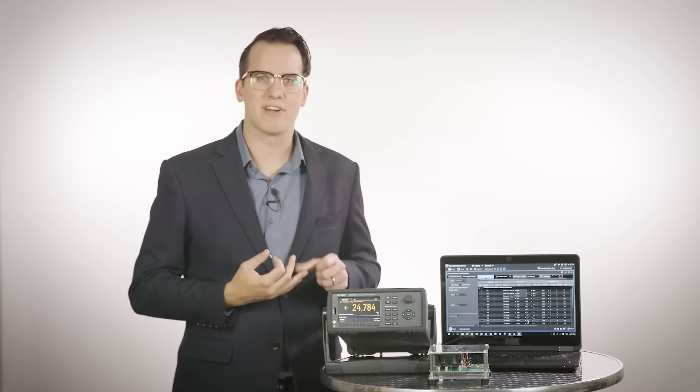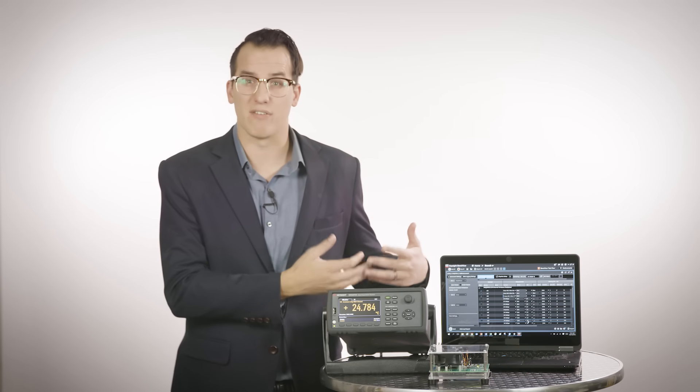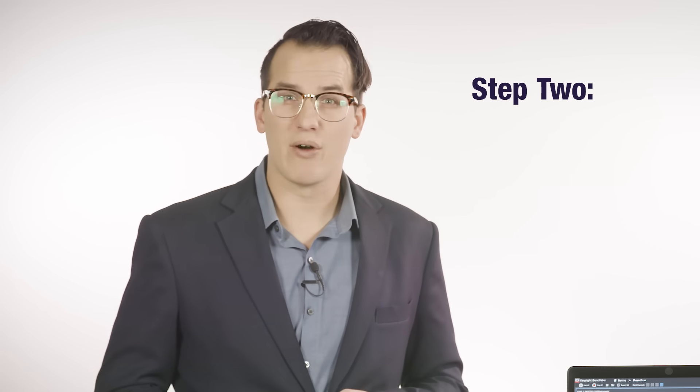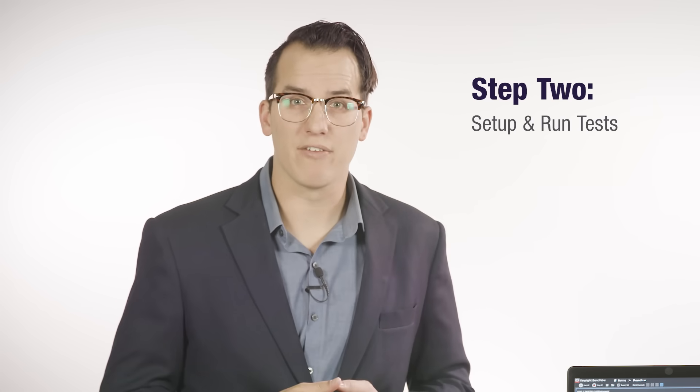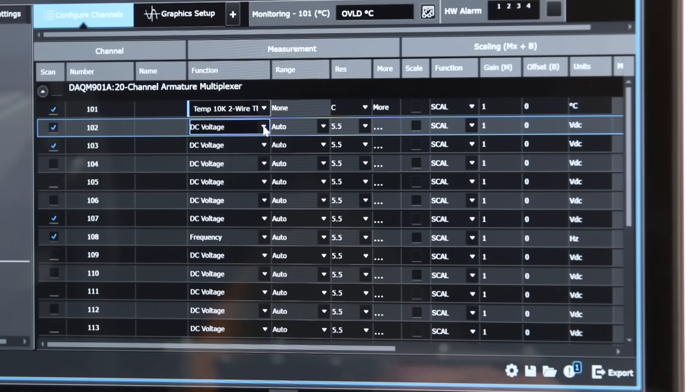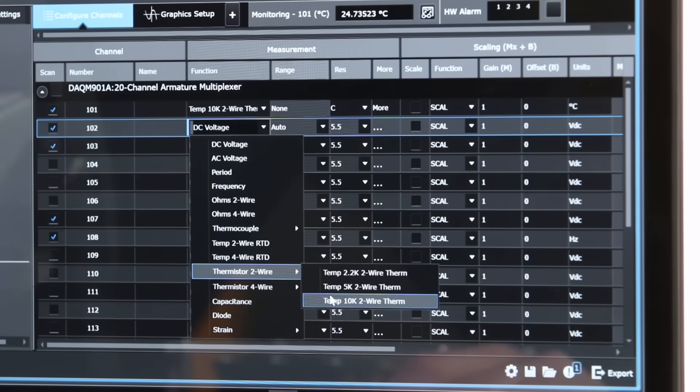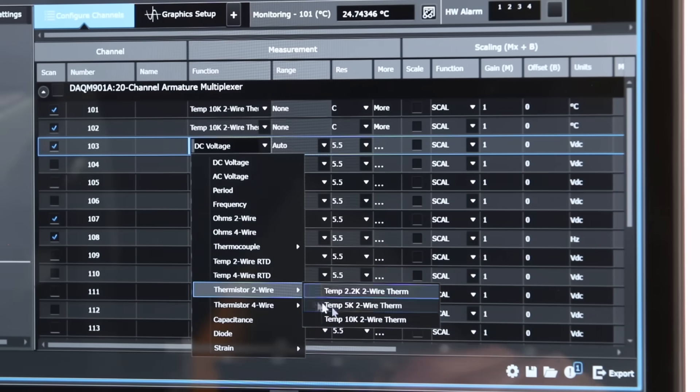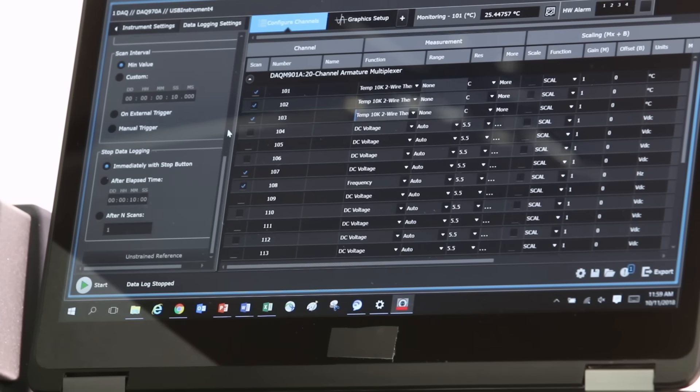Now that it's connected we'll go to step two, setting up our test. In BenchVue I'm gonna set up the temperature channels in an easy spreadsheet format. We're using 10 kilo-ohm thermistors so I'm gonna set each channel to the appropriate setting. Now that we're set up we can run it.